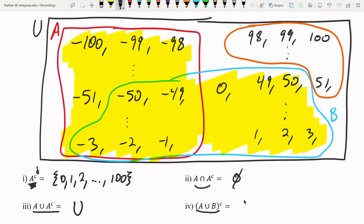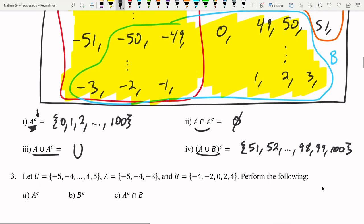This is A union B complement in orange here. And that's the set 51, 52, 98, 99, 100. That is A union B complement. Give it a try in number three.